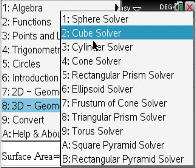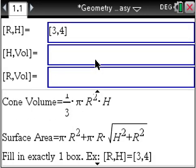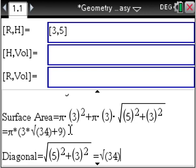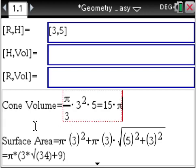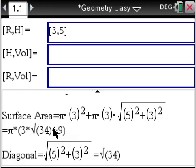Going back here, let's go to cone solver. Let's change this to a 5. Now we have cone volume, surface area, diagonal.